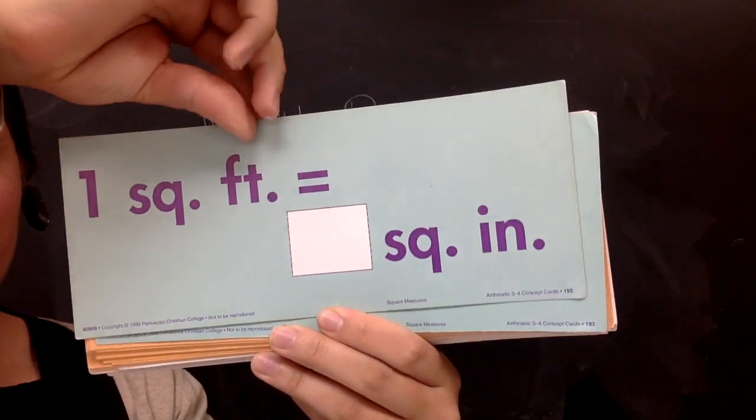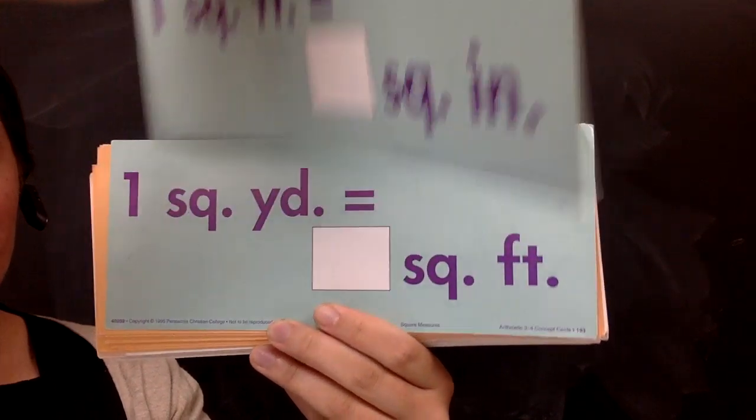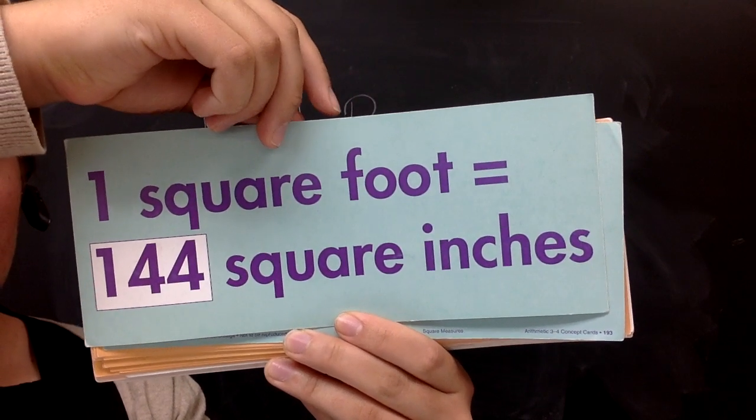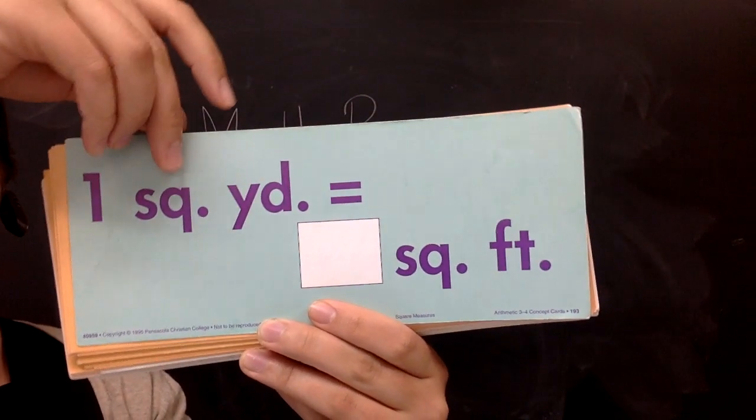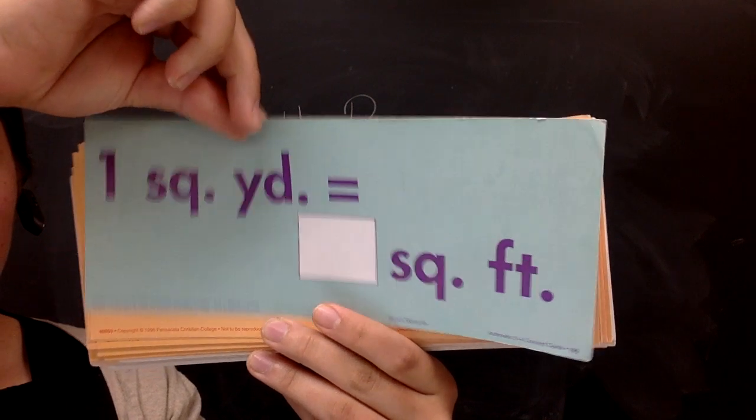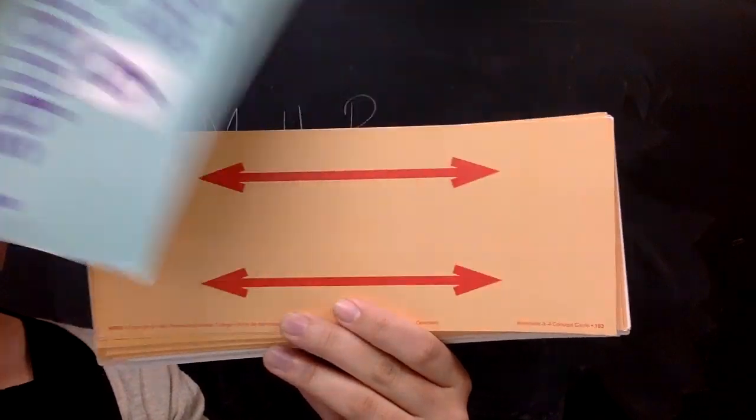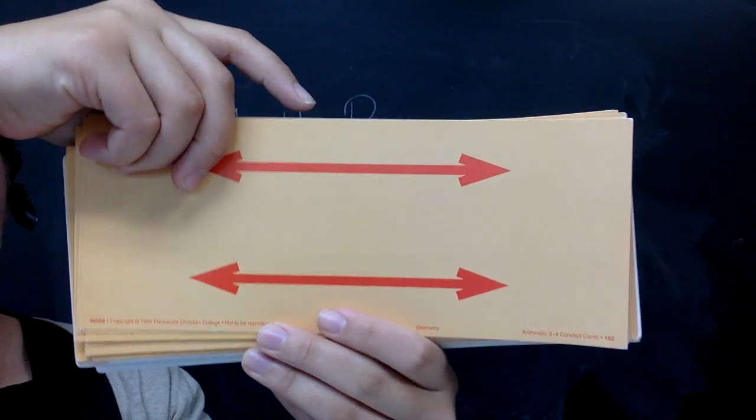One square foot equals how many square inches? 144. One square yard equals how many square feet? 9.